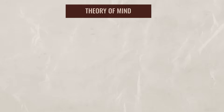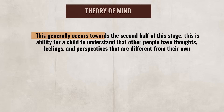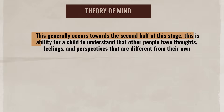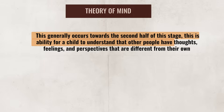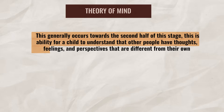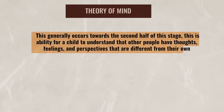As children get older, they start to develop a theory of mind, which generally occurs towards the second half of the pre-operational stage. This is the ability for a child to understand that other people have thoughts, feelings, and perspectives that are different from their own.